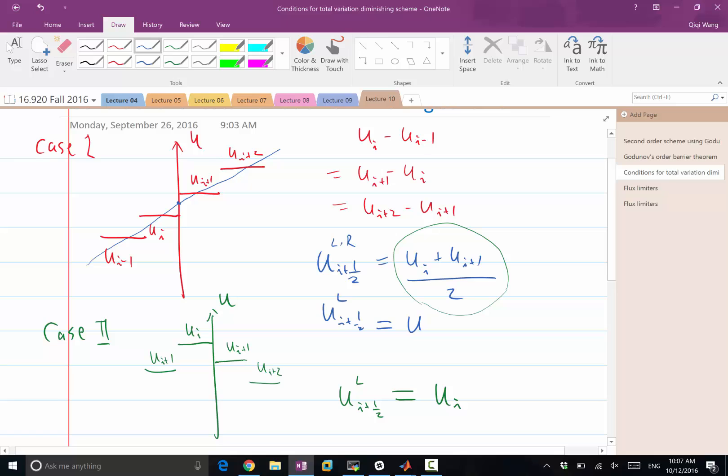So we can use ui minus half of ui minus ui minus 1. Okay, so here, let me rewrite it a little bit. So if I divide this by delta x, that's the slope. And if I multiply that by delta x over 2, it is saying that I am computing the slope using ui and ui minus 1 here.